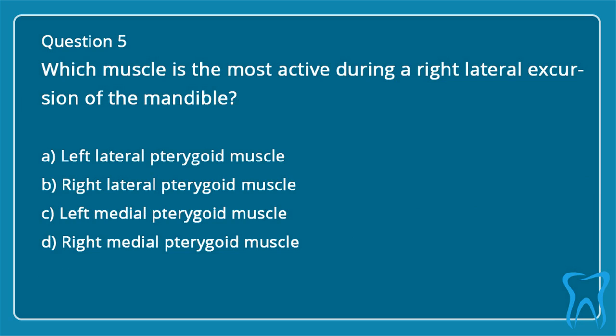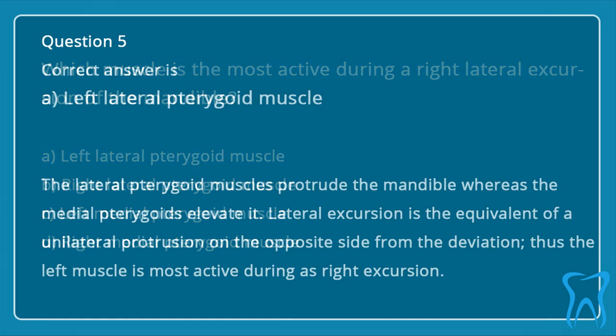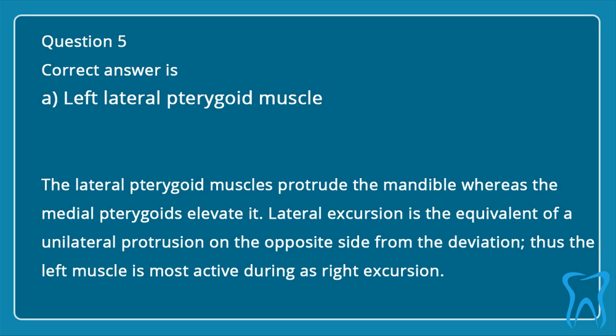Question 5. Which muscle is the most active during a right lateral excursion of the mandible? a. Left lateral pterygoid muscle. b. Right lateral pterygoid muscle. c. Left medial pterygoid muscle. d. Right medial pterygoid muscle. Correct answer is a: Left lateral pterygoid muscle. The lateral pterygoid muscles protrude the mandible whereas the medial pterygoids elevate it. Lateral excursion is the equivalent of a unilateral protrusion on the opposite side from the deviation, thus the left muscle is most active during a right excursion.